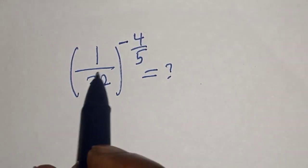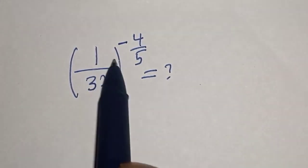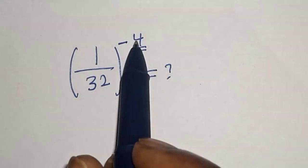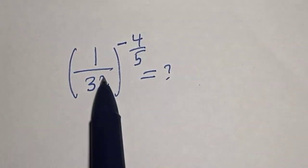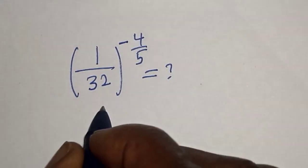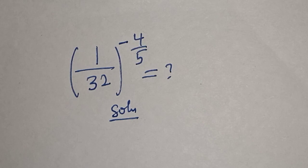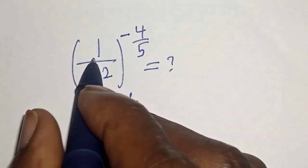Hello, welcome to MathJays. In this class we want to simplify this math problem: 1 divided by 32, all raised to power minus 4 over 5. Like, share, comment, and subscribe. Solution: 1 divided by 32 can be written as...